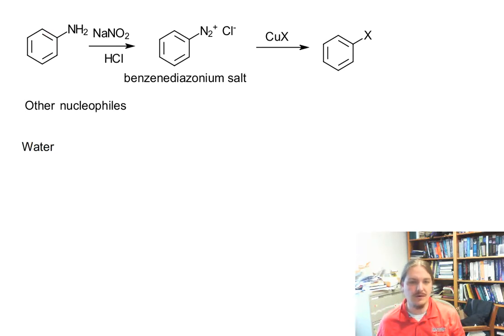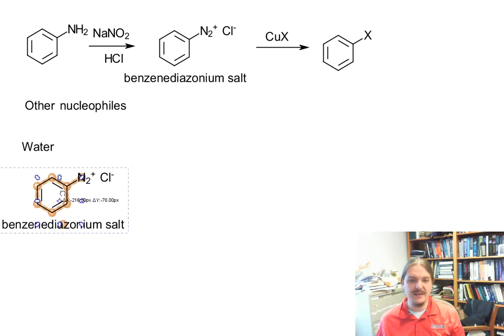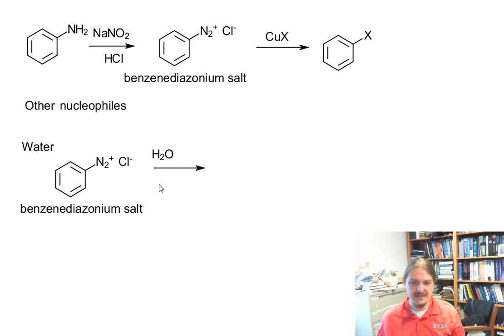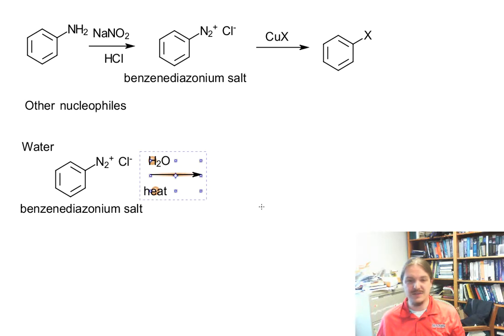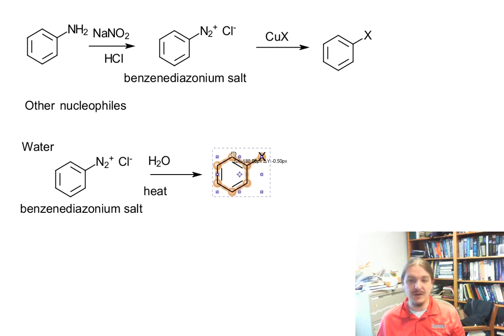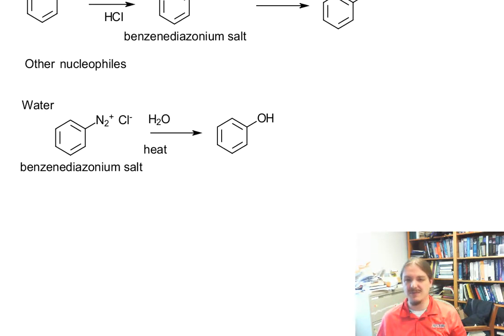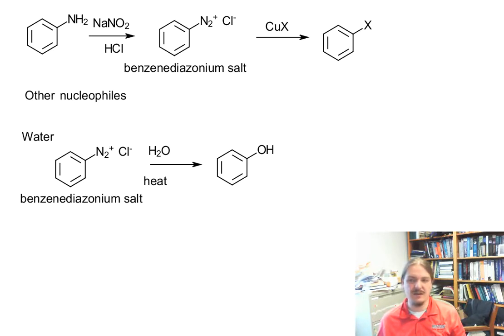We're going to start with water. These benzene diazonium salts have some supercharged leaving groups on them, so things that are perhaps not even the best nucleophiles will probably still displace the nitrogen. We can react benzene diazonium chloride with water — this needs to be heated — and this is more likely to be an SN1 and not the radical mechanism described in the previous video. This is another way that you can make phenol starting with aniline.